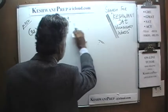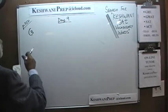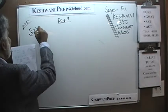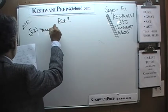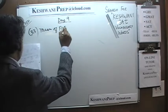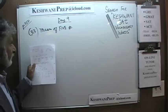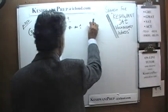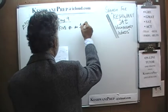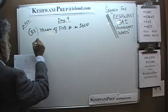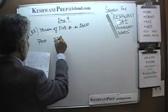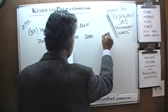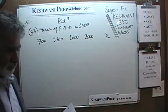Number 33 is an interesting one. We are told that the mean of 5 numbers is 1600. And here are the 5 numbers: 700, 1200, 1600, 2000, and finally X. Our job is to find out what X is.